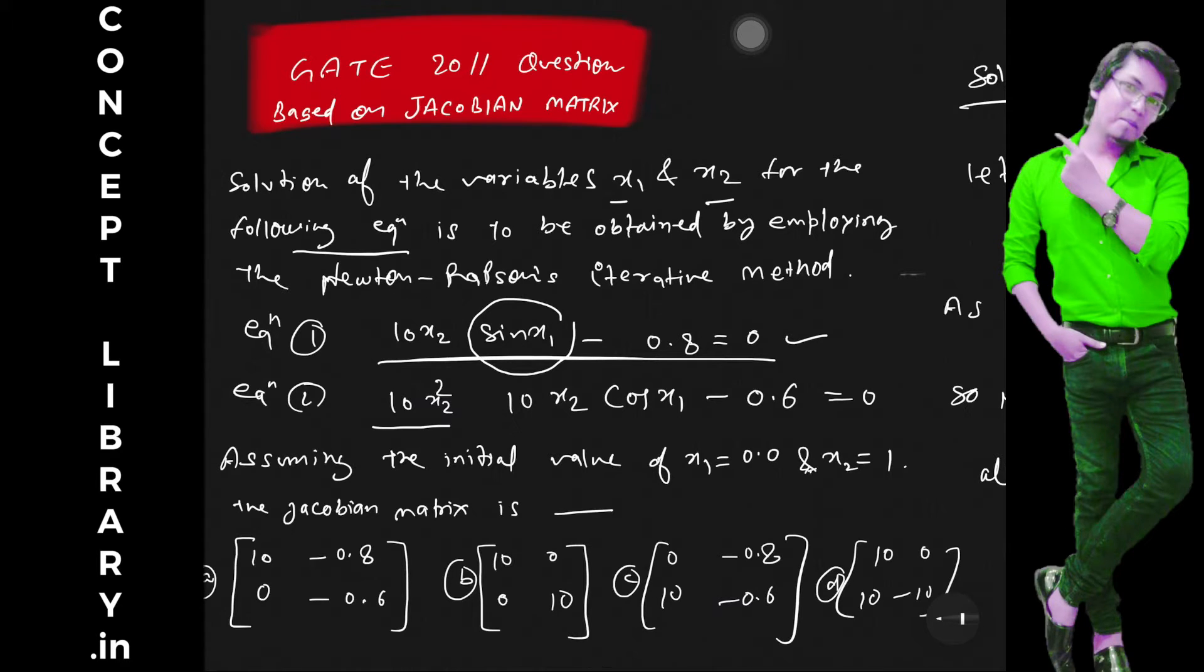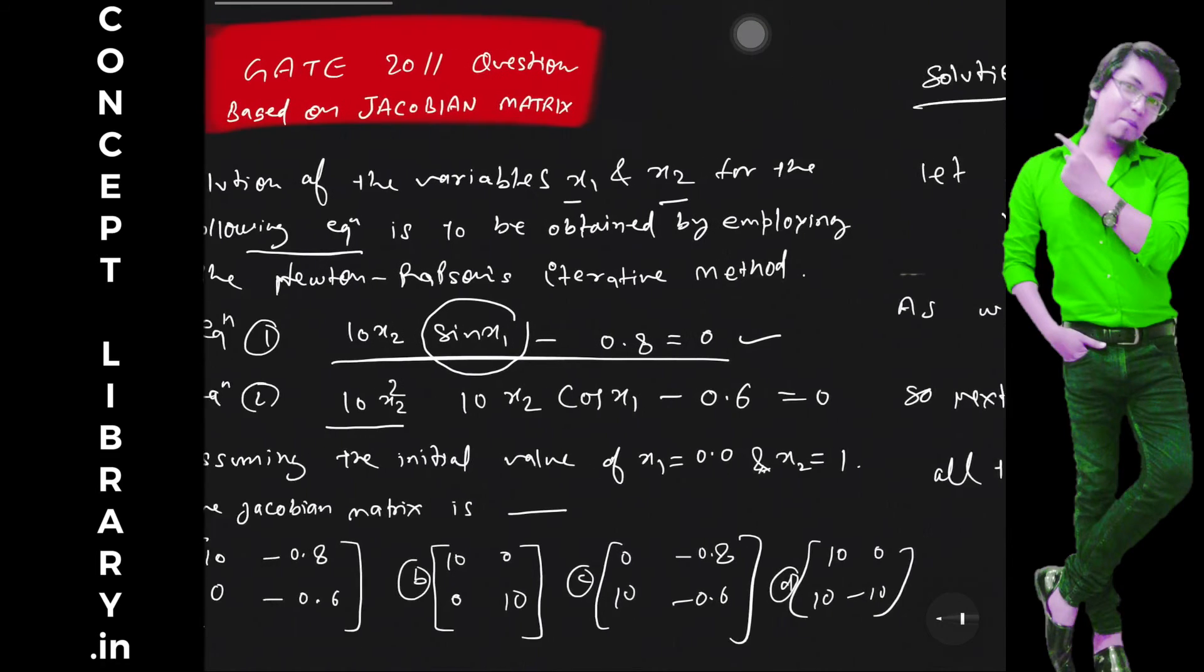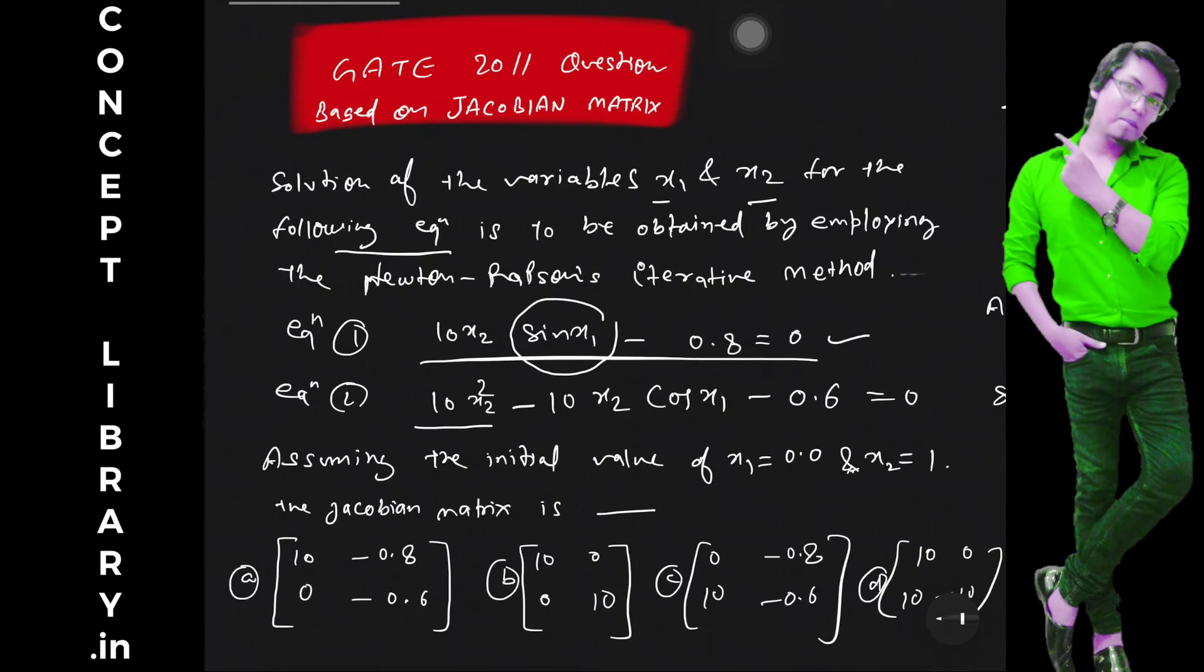and another equation is 10x2 square. Actually I am missing the sign here, let me check. It is minus x2, yeah it is minus 10x2 cos x1 minus 6 is equal to 0.